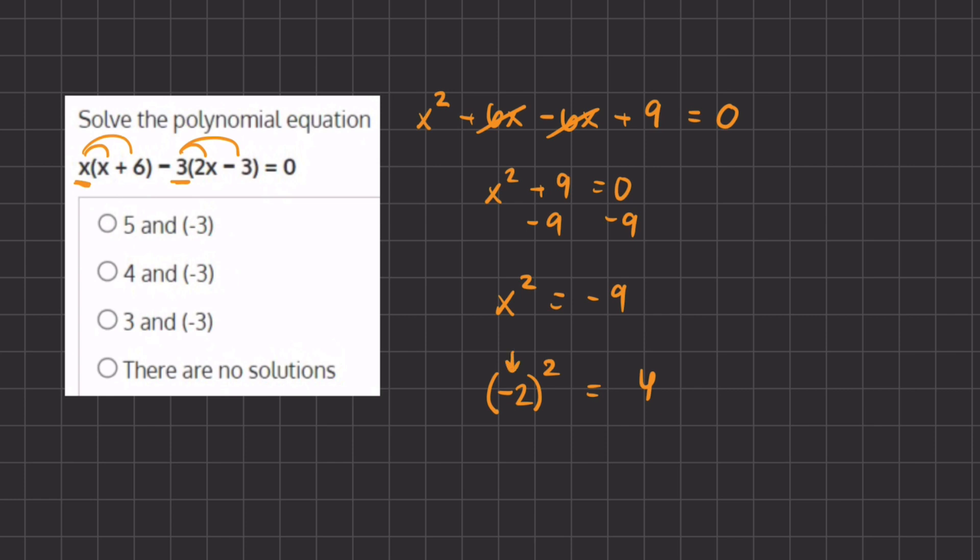And if we have a positive number inside of our parentheses, then it will also be positive because two positive numbers multiplied by one another will also give us a positive number. And therefore this is incorrect and impossible to find a solution for, and therefore d will be our final answer because there are no solutions for the value of x.